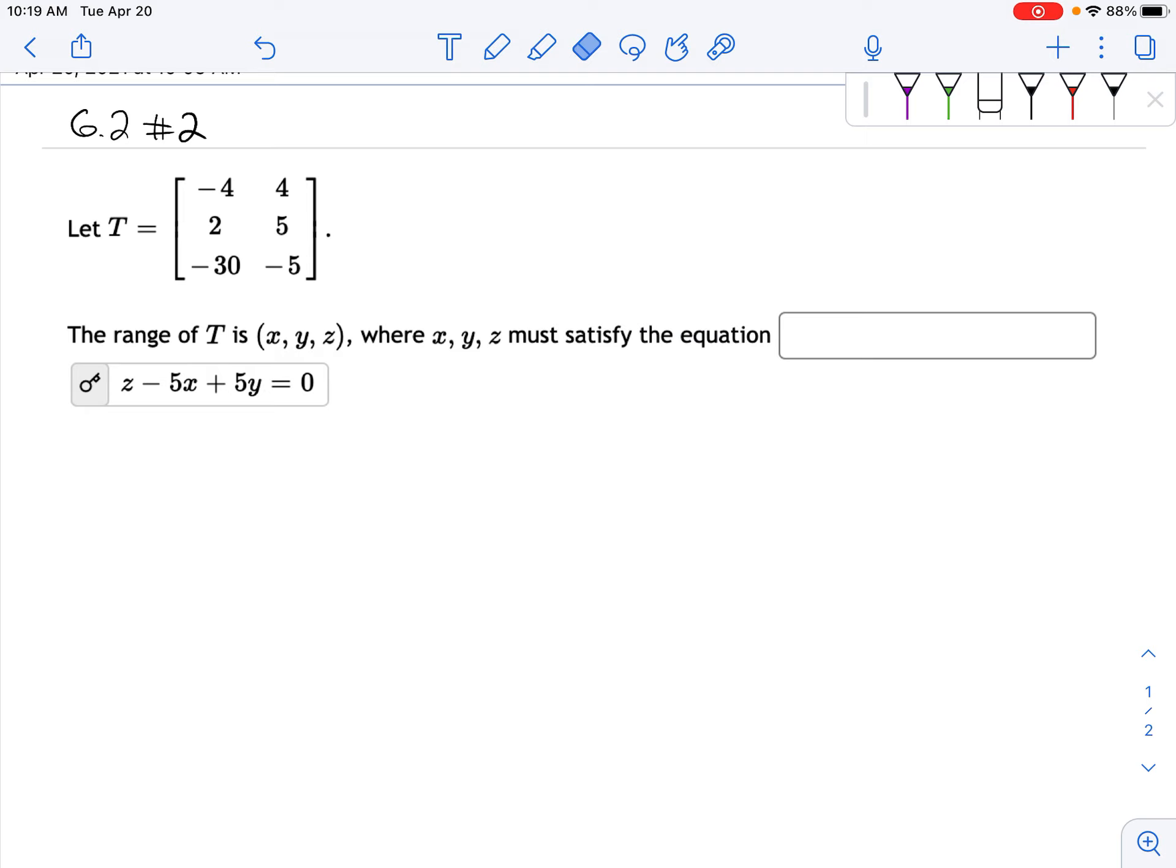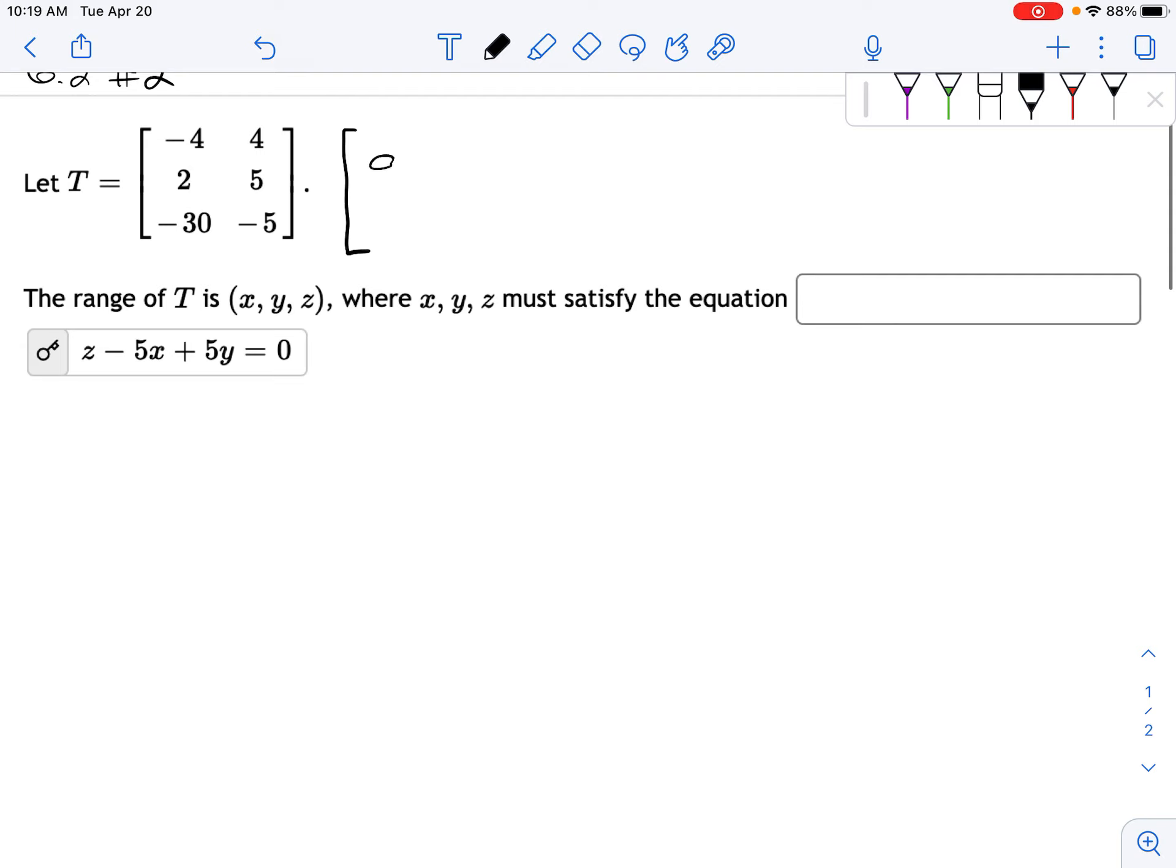Now, I've put the answer here. What's going on here is we're taking T, and T, you multiply it by